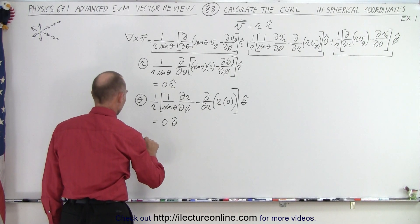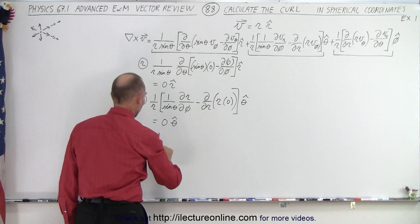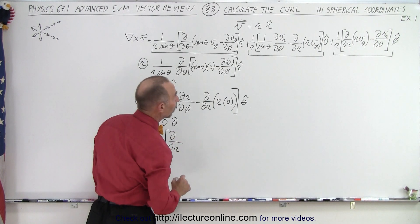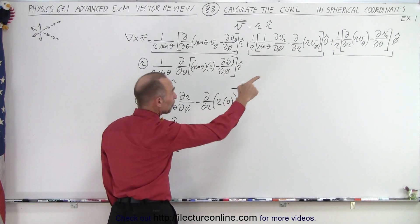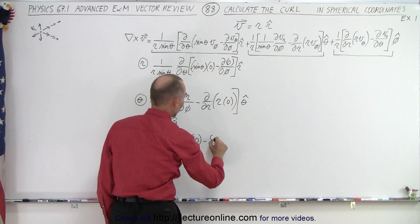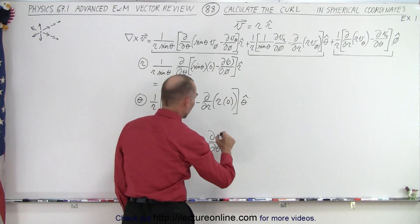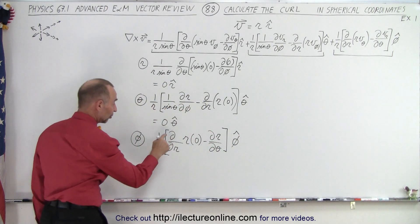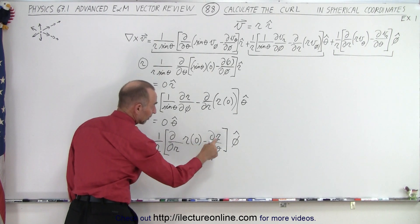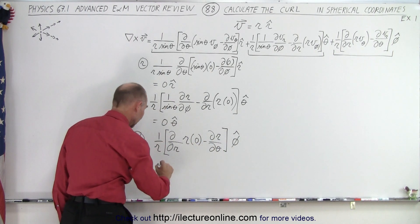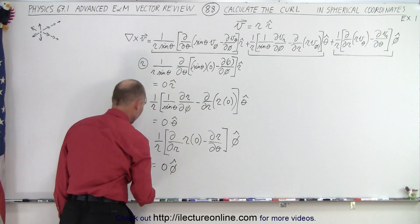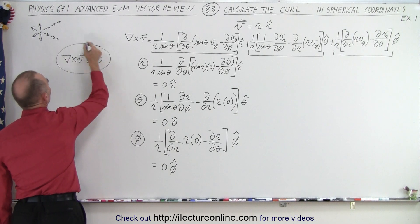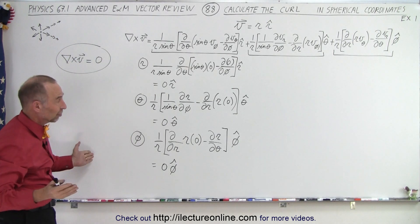Finally, we're going to do the Phi direction. In the Phi direction, we have 1 over R times the partial derivative with respect to R of R times the Theta component of V, which is zero, minus the partial derivative with respect to Theta of the R component of the vector, which is equal to R — and that's in the Phi direction. The partial derivative with respect to R of zero is zero, and the partial derivative of R with respect to Theta is zero as well. So we get zero in the Phi direction.